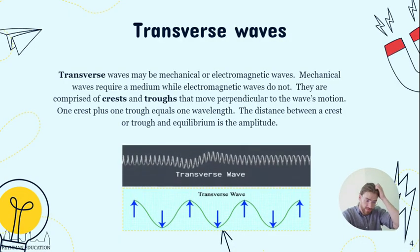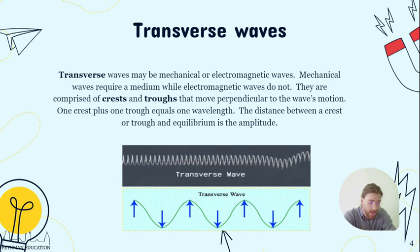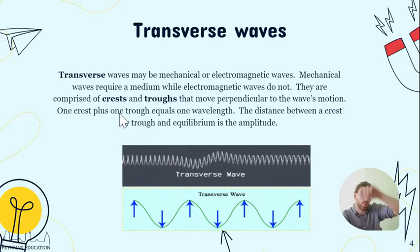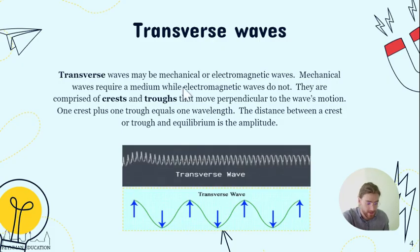When it comes to transverse waves, they can be mechanical or electromagnetic. They don't require a medium and they're going to be made up of something called crests and troughs. Crests are the top of the wave, troughs are the bottom of the wave. The wavelength is going to be one crest plus one trough, one complete cycle. When we're talking about the amplitude, it's going to be the distance between the middle of the wave and the crest, or the middle of the wave and a trough.